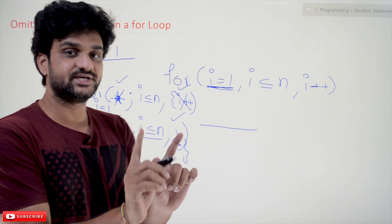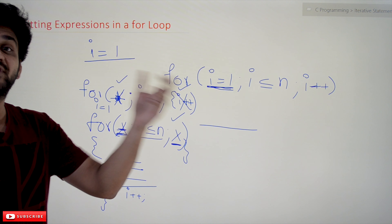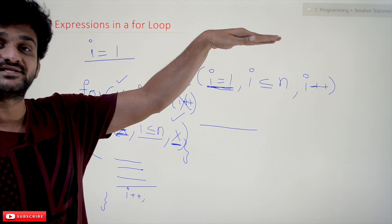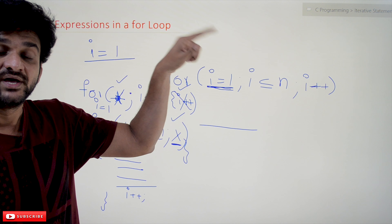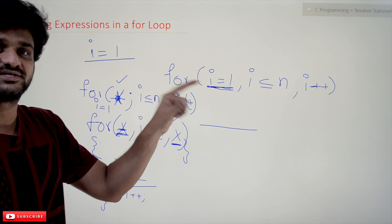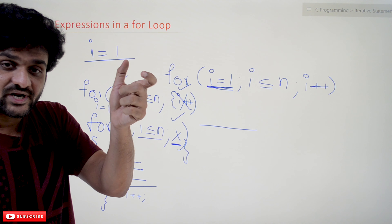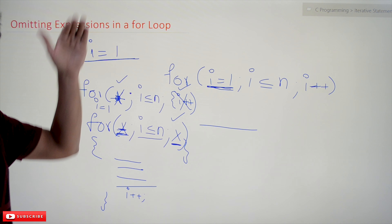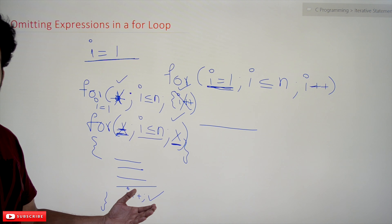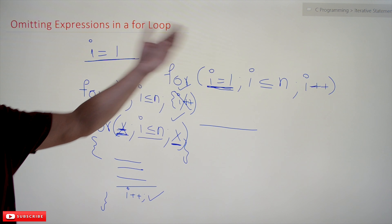If you closely observe, this for loop has no difference with the while loop that we used in the example. In the while loop we are going to have only the controlling expression. In the while loop example that we discussed previously, the variable value was initialized somewhere above the while loop, and the incrementation was done at the end of the loop's body — the last statement was i++. So this for loop is no different than that while loop from our previous examples.